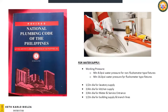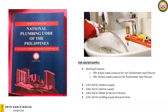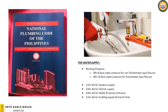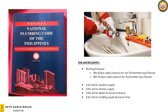Now let's go to the technical descriptions of these chapters. In Chapter 6, this is for water supply. The minimum working pressure for our plumbing system depends on the type of fixtures and their flushing actions. If there is a flushometer valve or flushometer type, it requires 16 PSI water pressure to function properly.